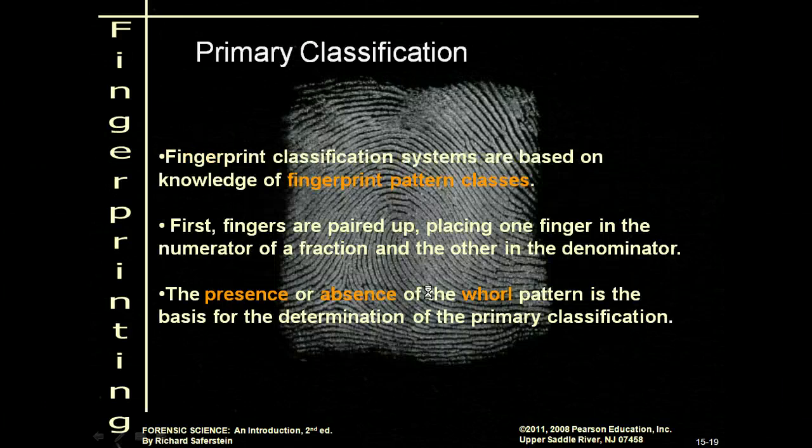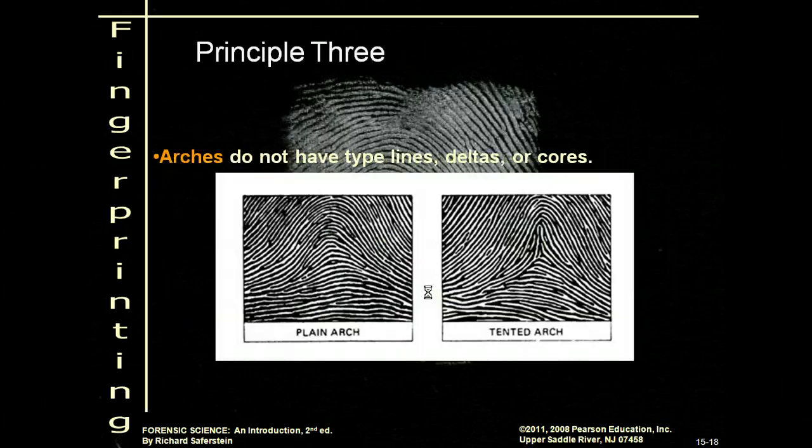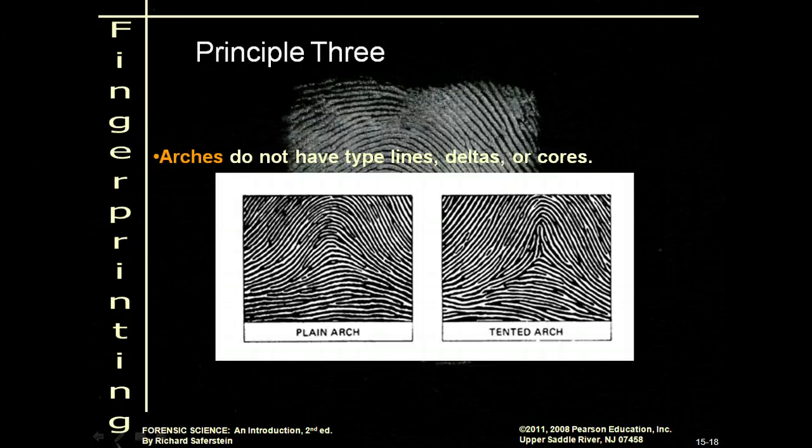You need to be able to look at a fingerprint and tell whether it is an arch, a loop, or a whorl, and then identify what kind — what type of whorl, what type of arch, or what type of loop. Good luck.